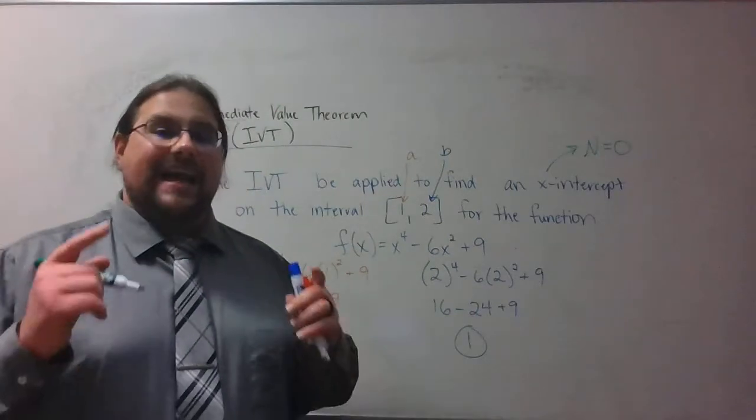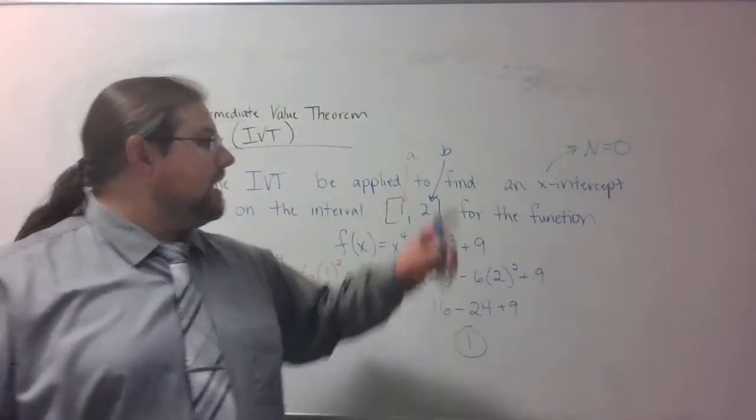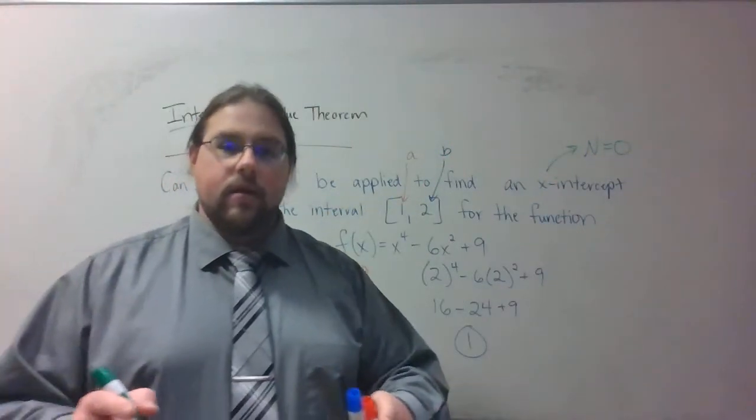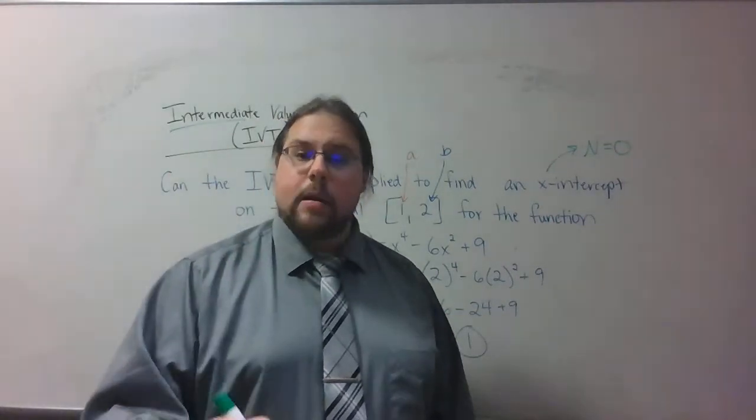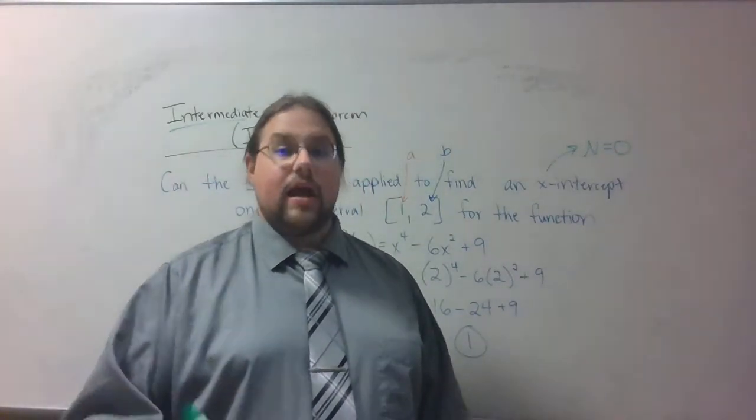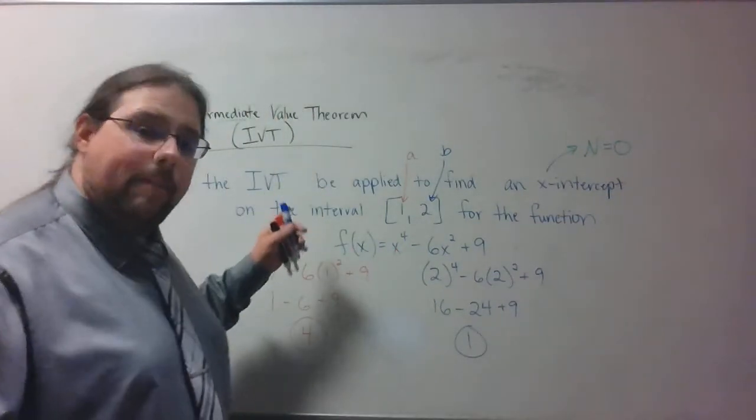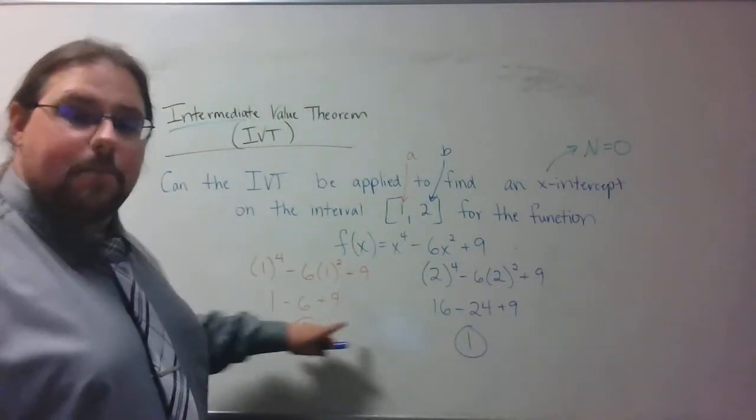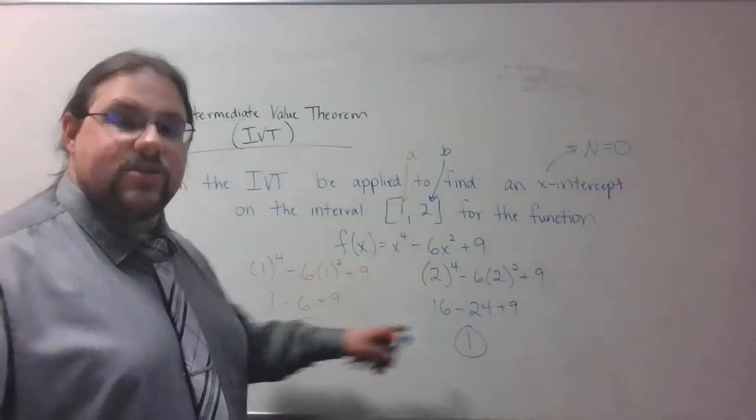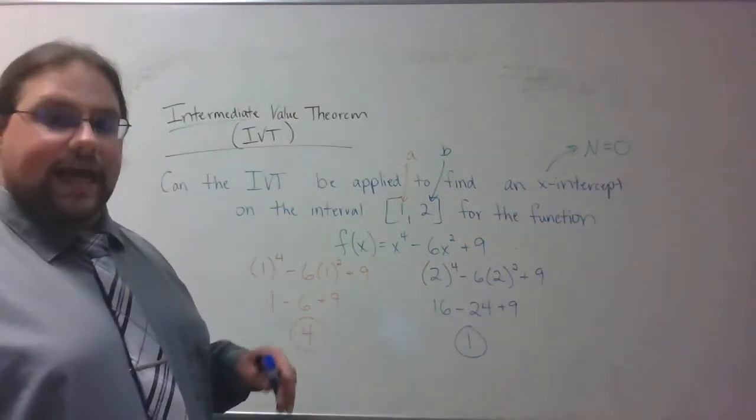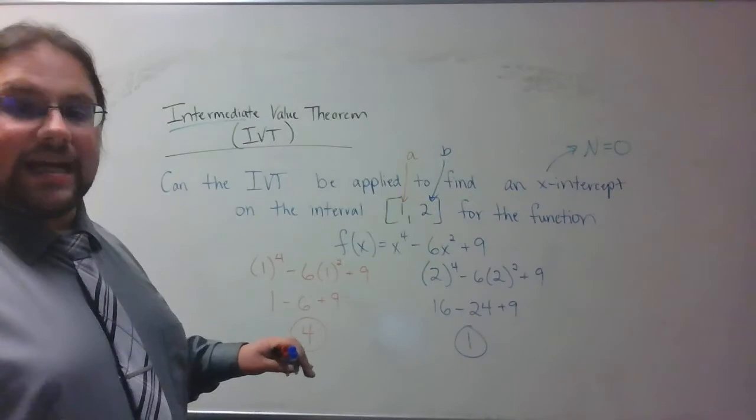But am I guaranteed to have an x-value that makes 0? No. I know that there is one, but I'm not guaranteed that there will be one. I know there is one, but the Intermediate Value Theorem doesn't help unless I have an intermediate value, something between these two numbers. That's what I'm getting at here.